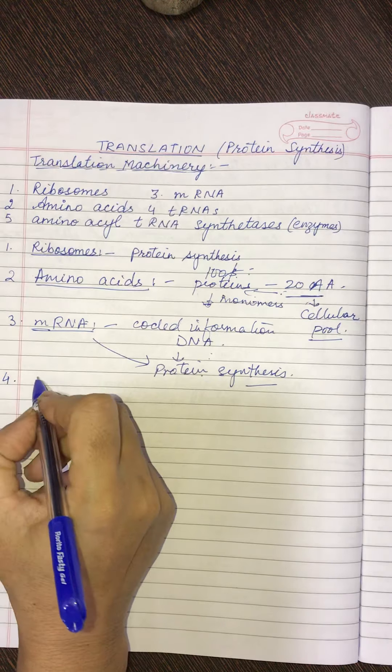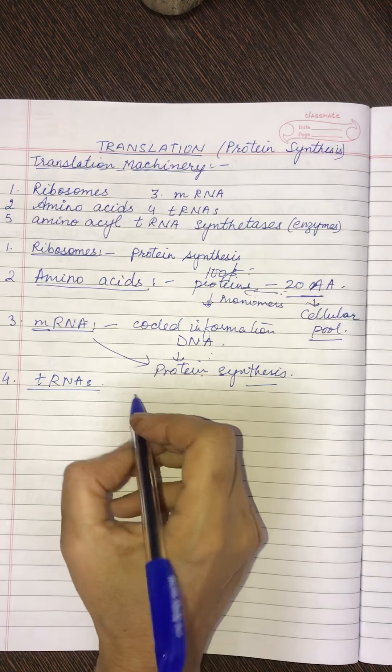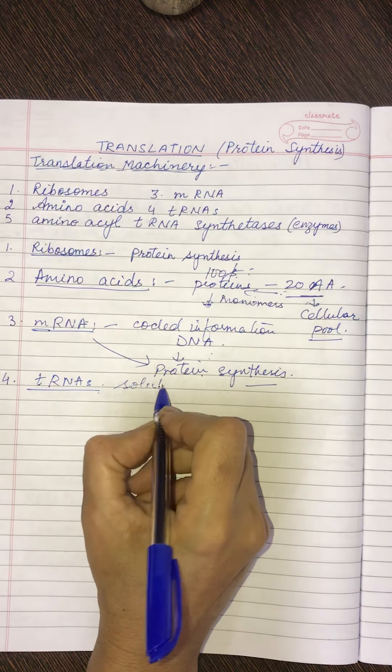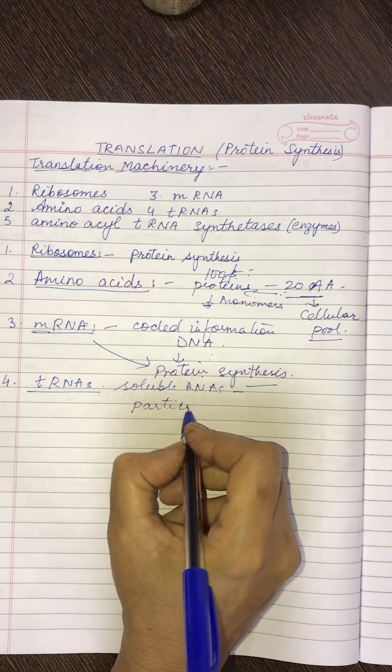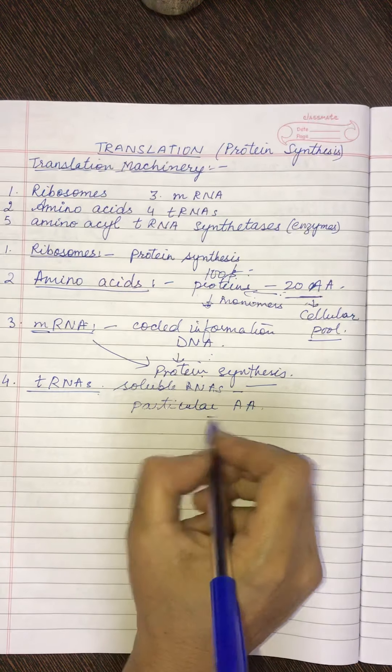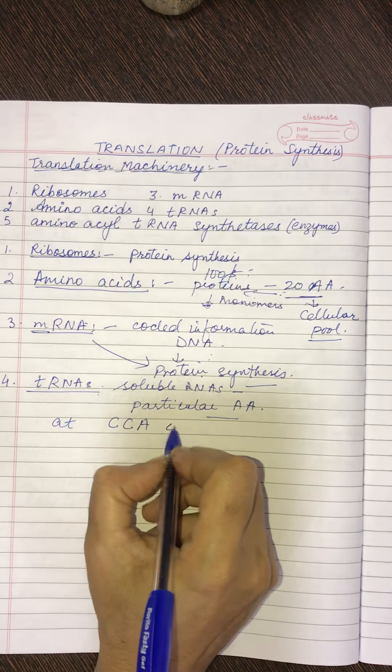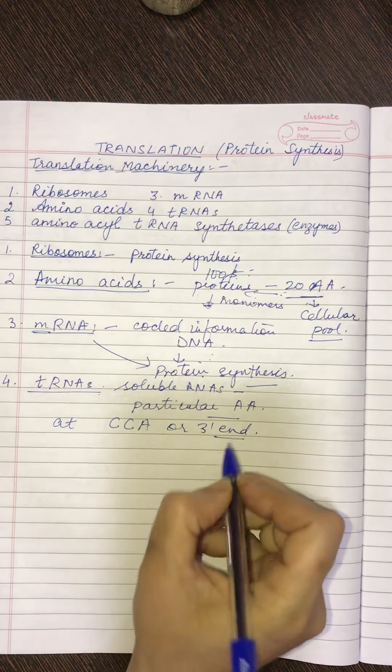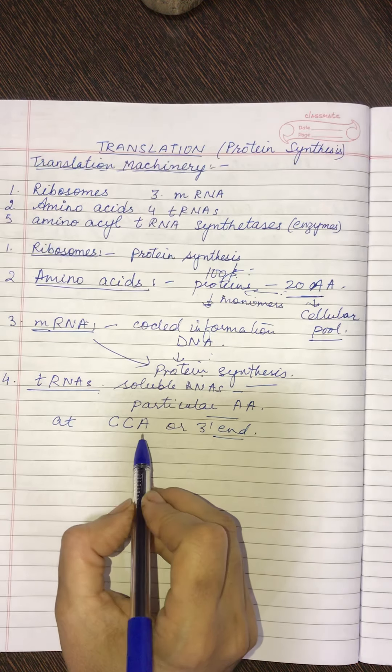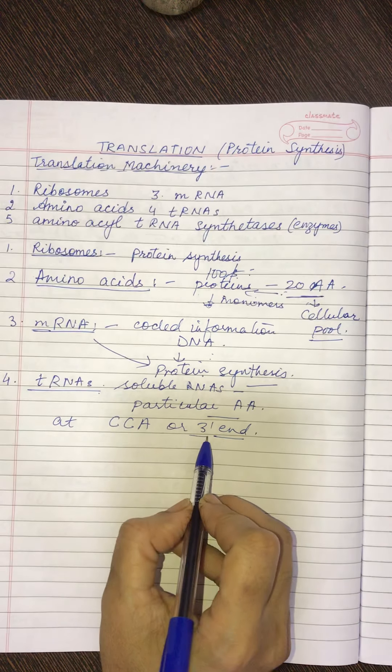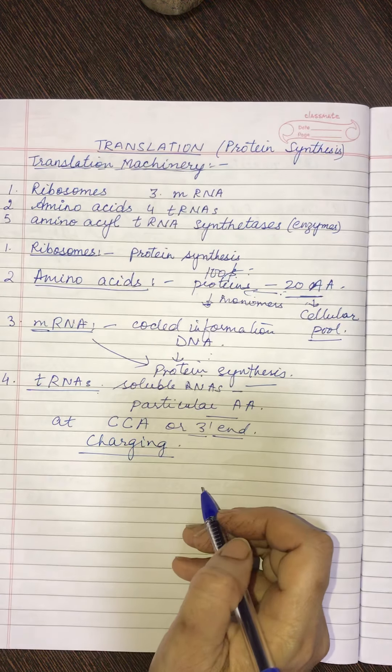Number four children, it is the tRNA. Again, I have discussed this structure. When the tRNAs, you know, they are transfer or soluble RNAs and they pick up a particular amino acid at the CCA or you can say 3 dash end of the tRNA. Here, the amino acid is picked up. When this tRNA picked up the amino acid at the 3 dash end, that process is known as the charging. What is that process known as? It is known as the charging.